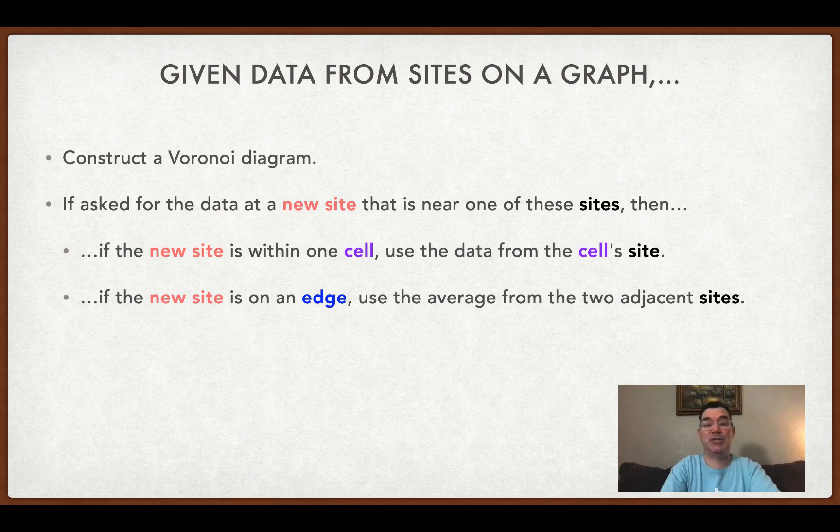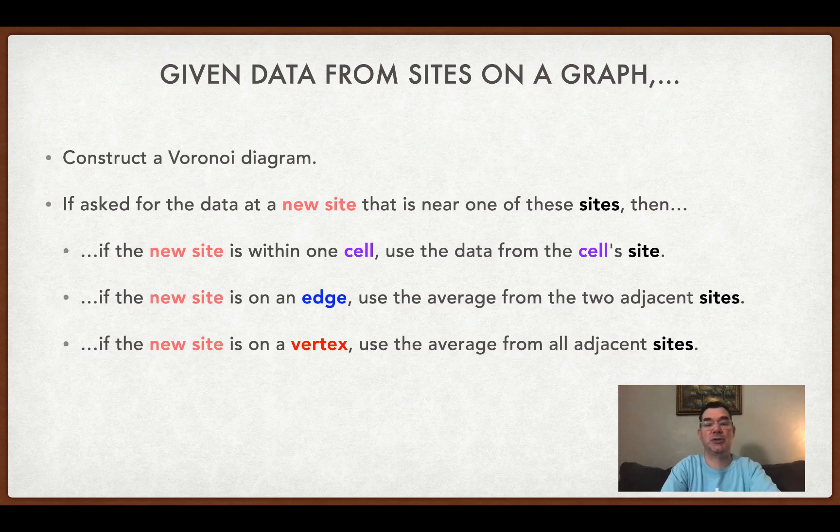If the new site is on an edge, use the average from the two adjacent sites that are touching that edge. And if the new site is on a vertex, use the average from all the sites that are adjacent to that vertex.